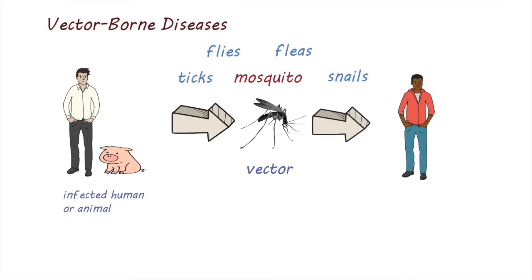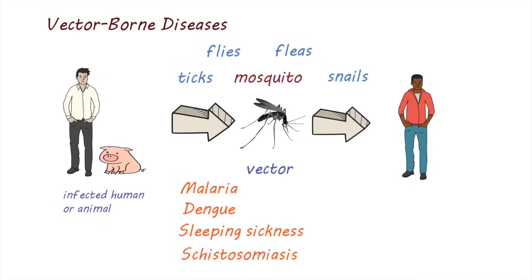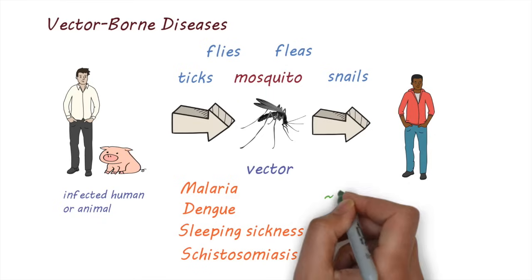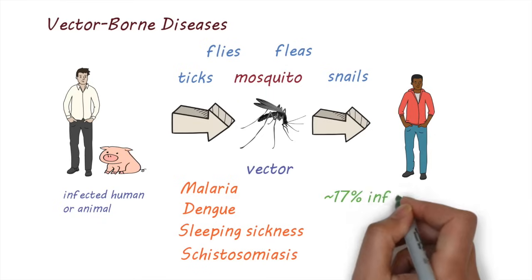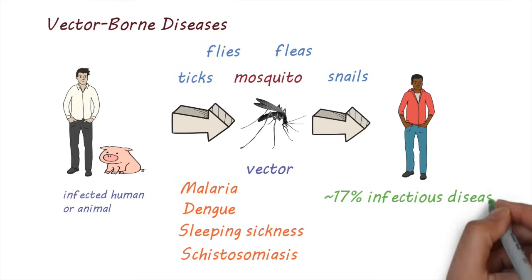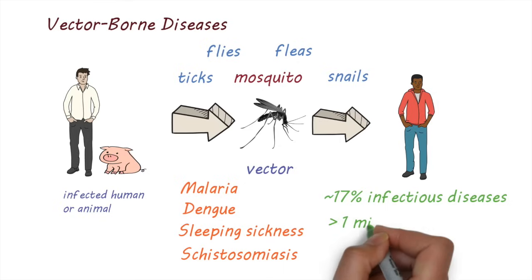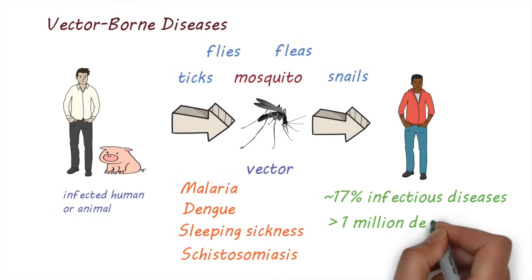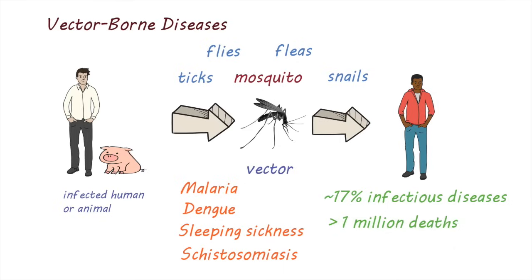Examples of vector-borne diseases include malaria, dengue, sleeping sickness, and schistosomiasis. Vector-borne diseases are responsible for over 17% of all infectious diseases and cause more than 1 million deaths each year.